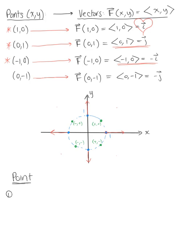For an arbitrary ordered pair (x, y) in quadrant 1, both x and y are positive. So the vector has both positive components, meaning it points in the positive x and positive y direction — it has a positive slope, pointing up and to the right.